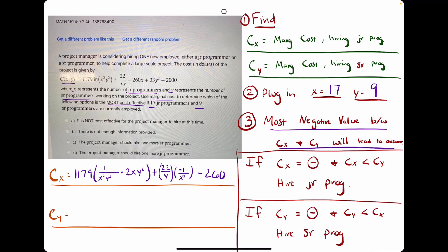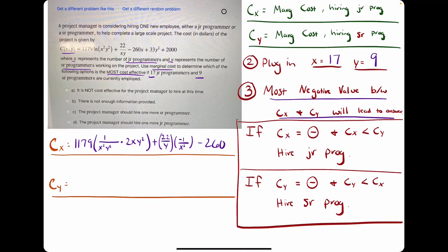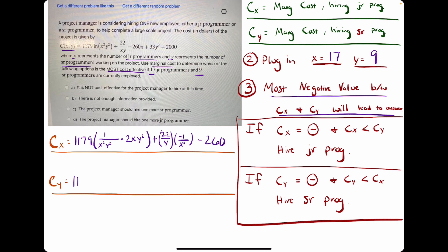We repeat the process, find the derivative of this with respect to y. So it'll be pretty similar in some ways. We have 1179. We find the derivative of Ln of x squared y squared, which is 1 over x squared y squared.